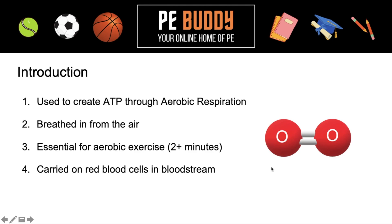Oxygen, also known as O2, is two oxygen molecules binded together. This is used to create ATP through aerobic respiration. We breathe it in through the air, which has a lot of other elements such as nitrogen and carbon dioxide, but our body is only interested in the oxygen. Oxygen is essential for aerobic exercise, which is roughly two minutes or longer, depending on the person's fitness levels, the type of exercise, and the intensity. It's carried around in the blood via the red blood cells.